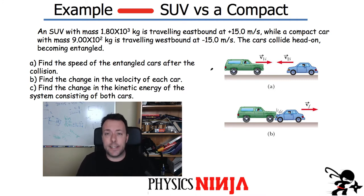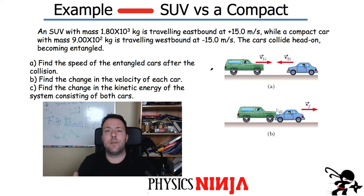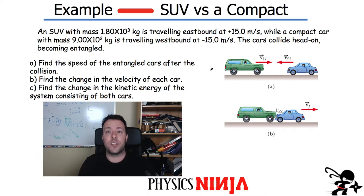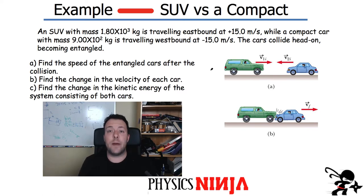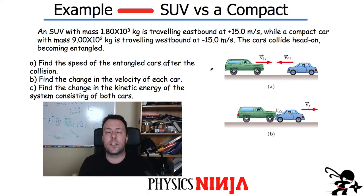This is a perfectly inelastic collision, so we're going to use conservation of momentum to find the final speed. Another question is what is the change of velocity of each object — the SUV and the car? And the last one is what is the change of kinetic energy of the system. Before the collision there's a lot of kinetic energy in the system, and during the collision you're going to lose some of that kinetic energy to heat.